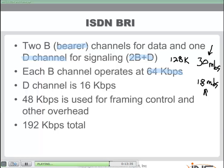The delta channel in Basic Rate Interface ISDN runs at 16 kilobits per second, used for signaling, framing, and control traffic. There is also 48K of overhead for framing control and other overhead in the ISDN environment. So the total ISDN BRI bandwidth adds up to 192K — that's 128K for the two bearer channels, plus 16K for the delta channel, plus 48K of overhead.